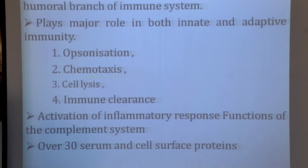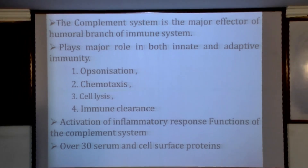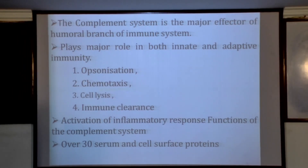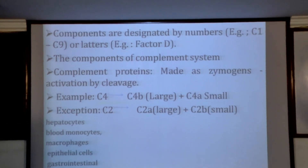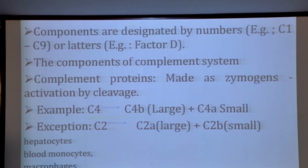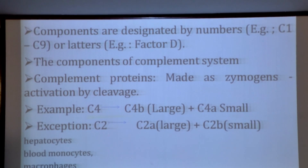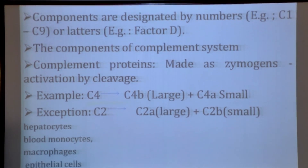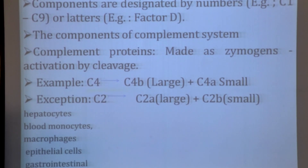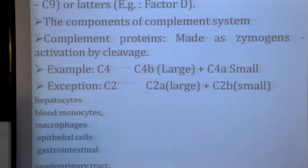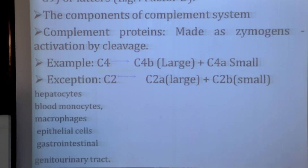Around 30 serum proteins have been identified in human blood plasma. The components are designated by numbers: C1, C2, C3, C4, C5, C6, C7, C8, and C9 respectively. Factor D is also included among the complement proteins.